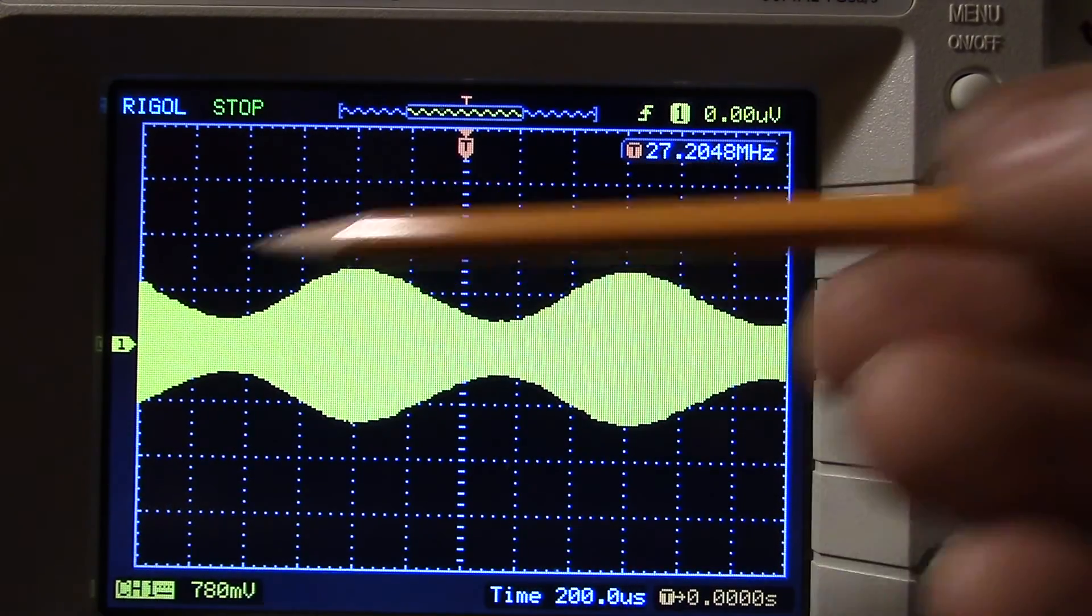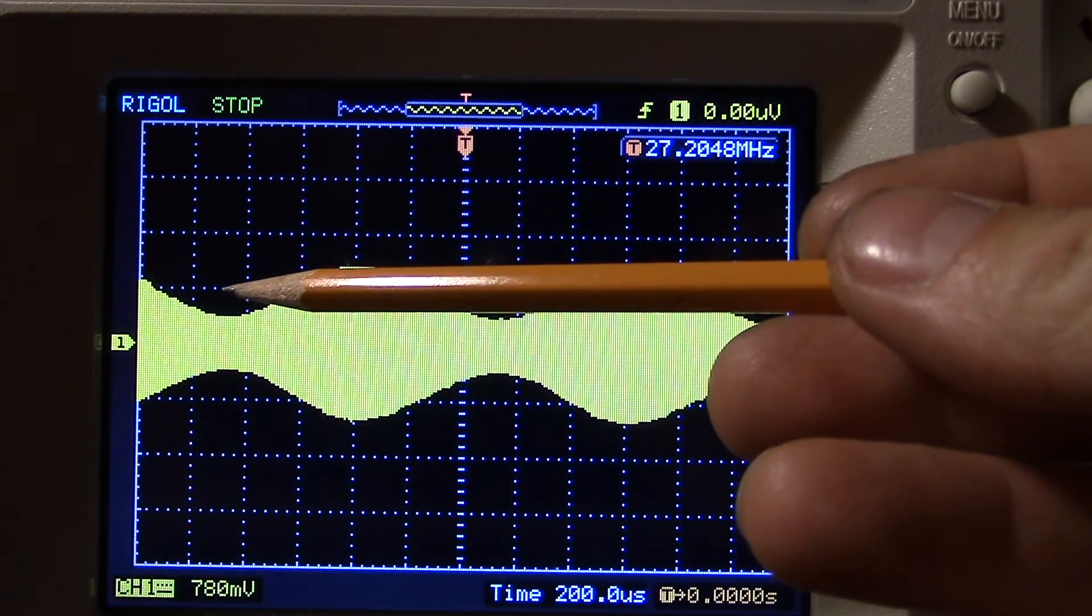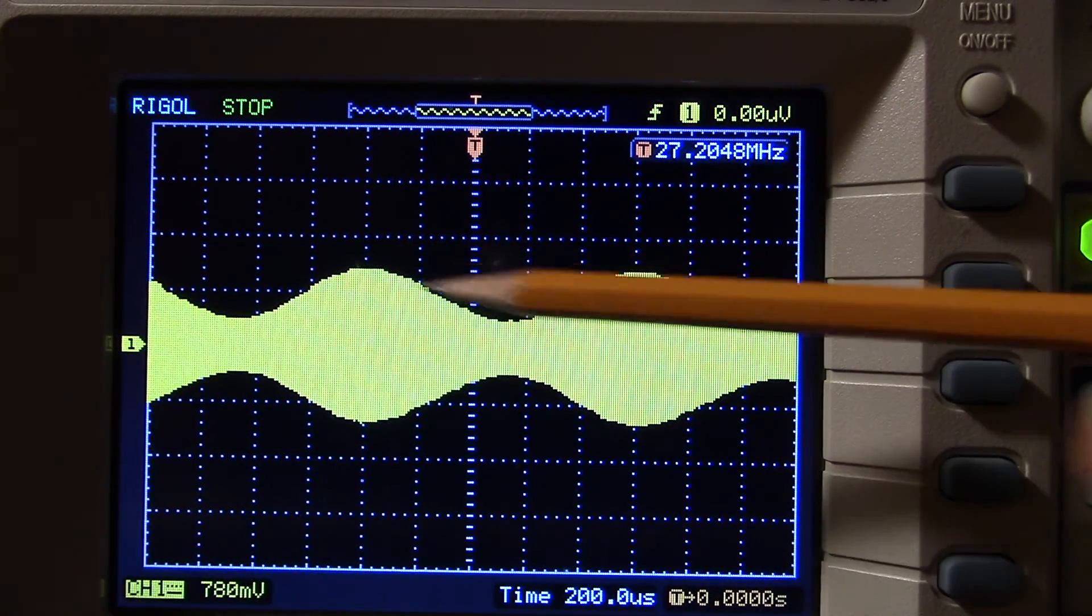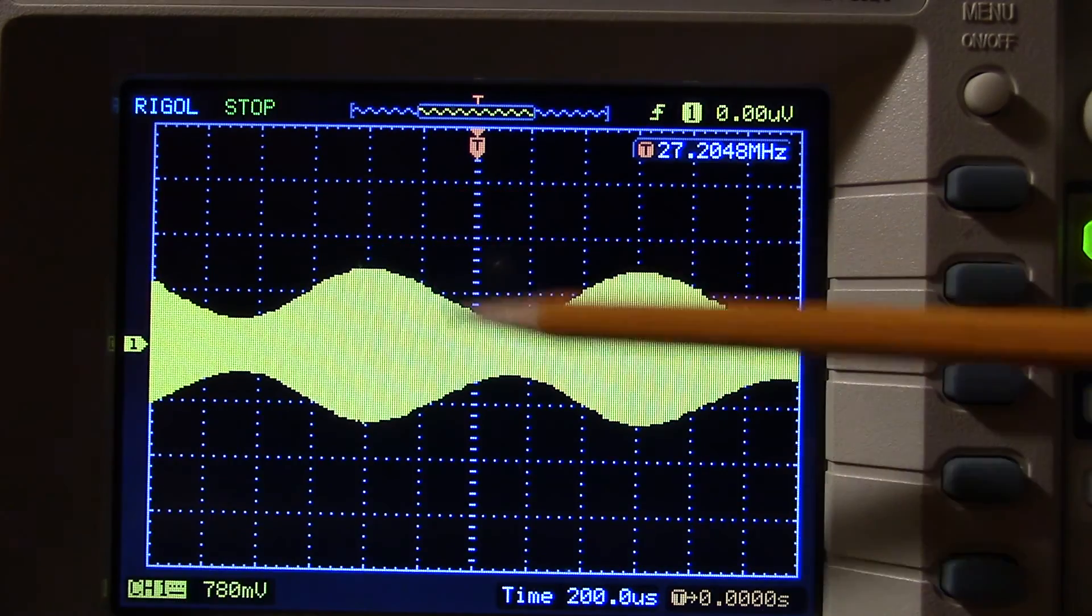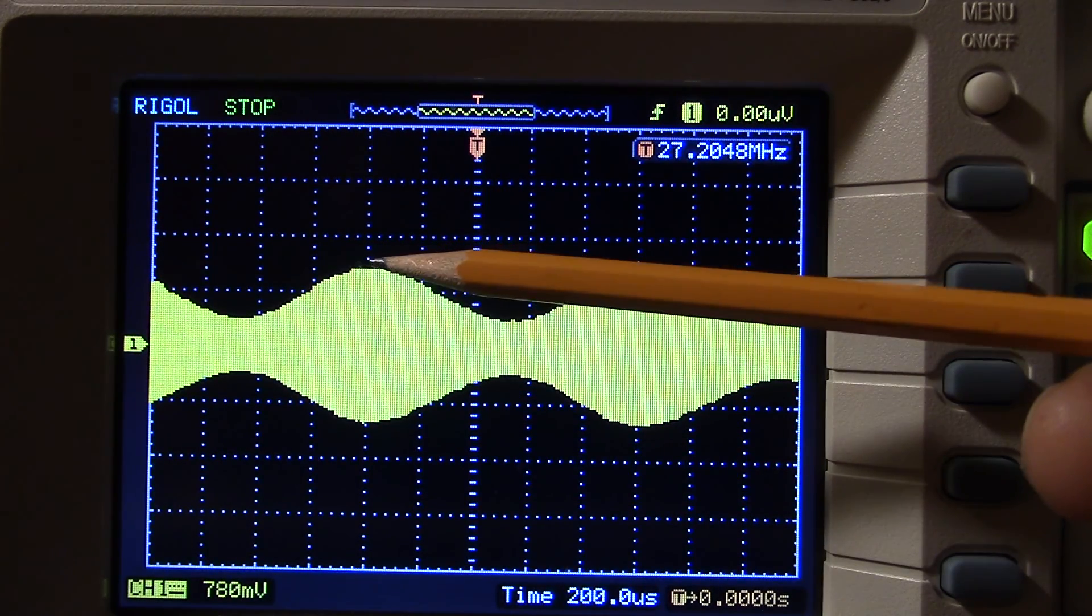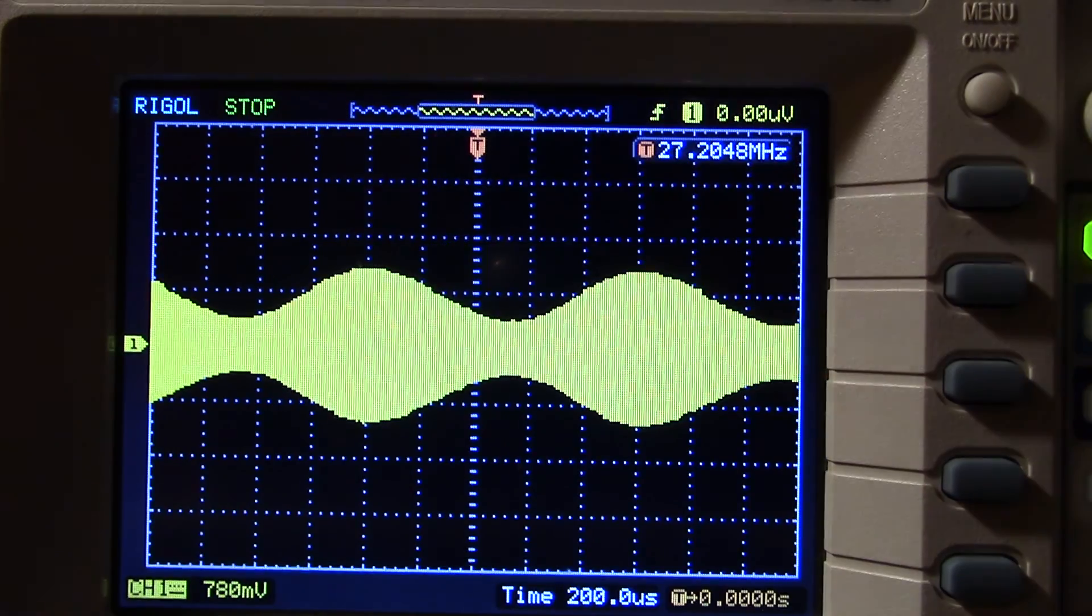And, like I said before, remember, our reference dead carrier was right there. And, it went up this, that far. And, it went down the exact same distance. Symmetrical. These are the positive peaks. These are the negative peaks. Alright, I'm going to unfreeze this.